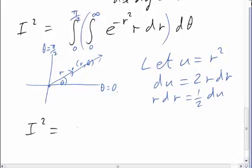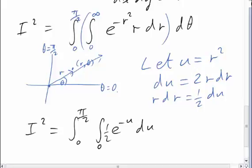I squared is, we'll keep the theta integral for the moment, but we'll worry about that at the end. And the r part has now become the integral e to the minus u times 1 half du. As for the limits, well, u equals r squared. So when r is 0, u is also 0. And when r gets big, u also gets very big. So the limits are just the same. Finish off with a d theta on the end there.